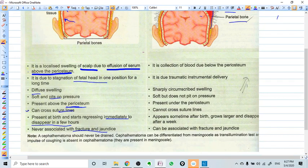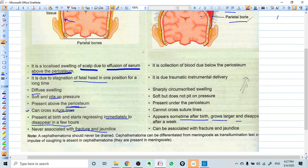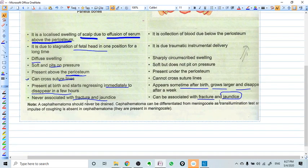It cannot be pressed and there cannot be a pit on pressure. So it cannot cross suture line, it is present under periosteum, and it can occur after birth even and grows longer and disappear after a week. It is longer duration. It is associated with fracture of the fetal skull and followed by jaundice. Why jaundice? Because there is a collection of blood and the blood is definitely absorbed with the time and that bilirubin will come into the blood circulation and at the time we have a jaundice.